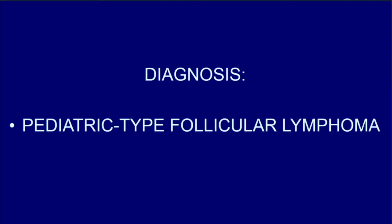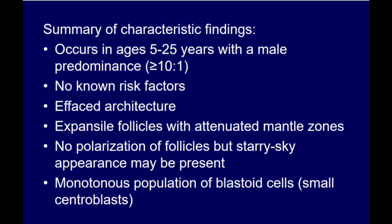This is a good example of pediatric type follicular lymphoma. The summary of findings includes effaced architecture with expansile follicles that have attenuated mantle zones, no polarization, and no tangible body macrophages. You sometimes do see a starry sky appearance, which can make people think there may be tangible body macrophages. There is often a monotonous small blastoid appearance to the cells, and even though the follicles are made up of small blastoid cells, this entity is not graded.